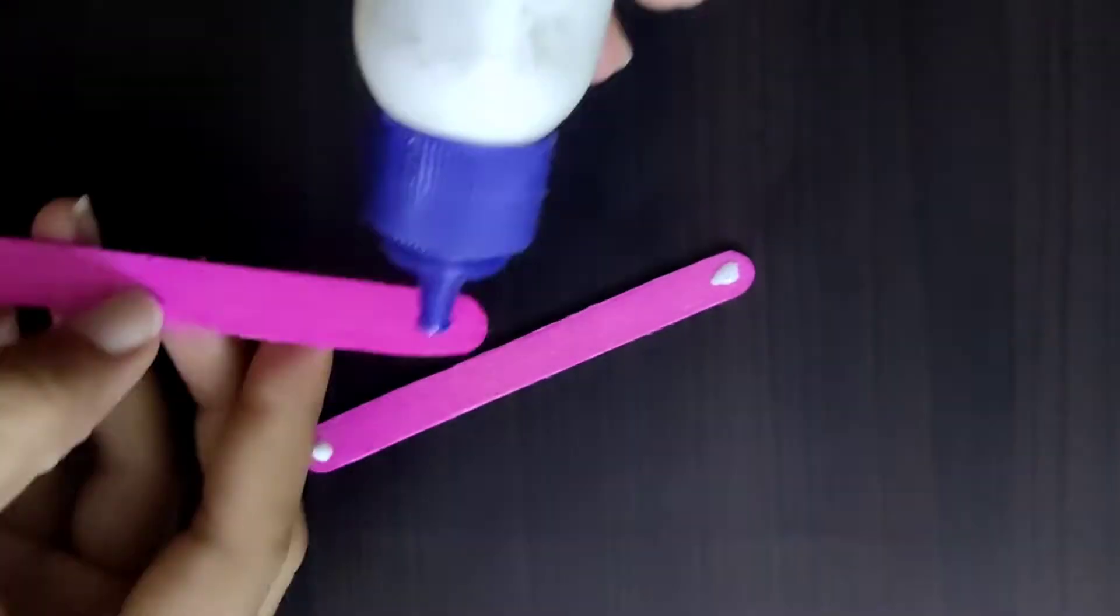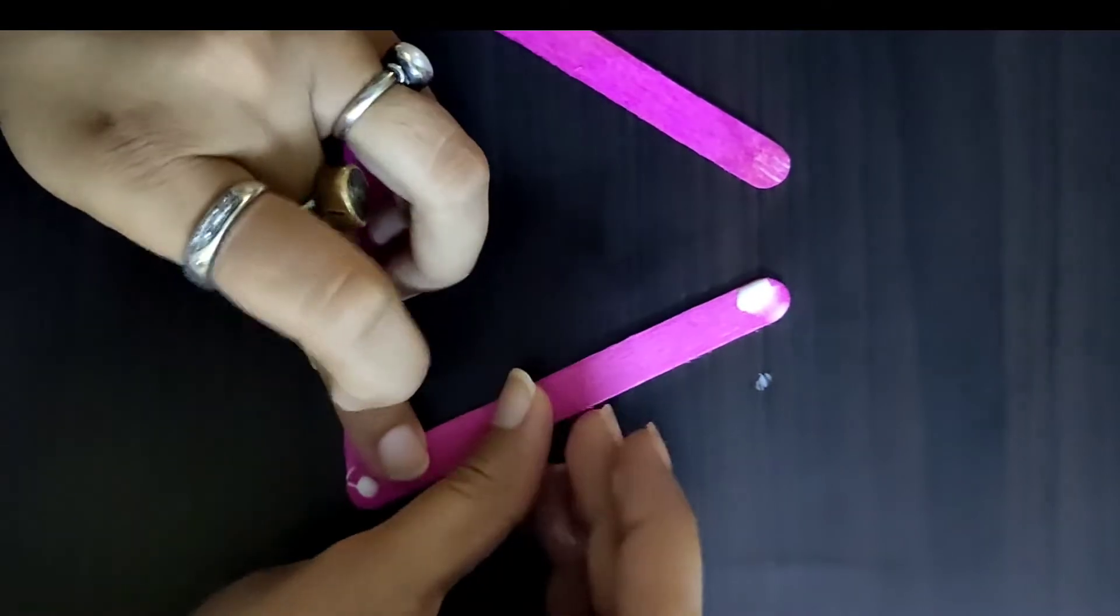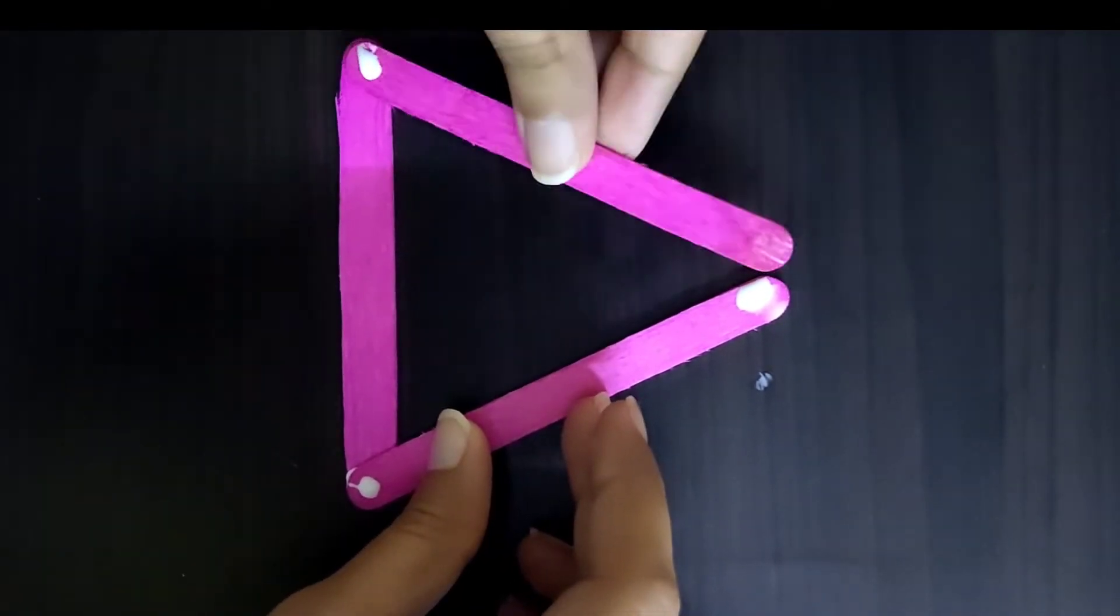Now we take three sticks of the same color, apply glue on them, and make a shape like a triangle.